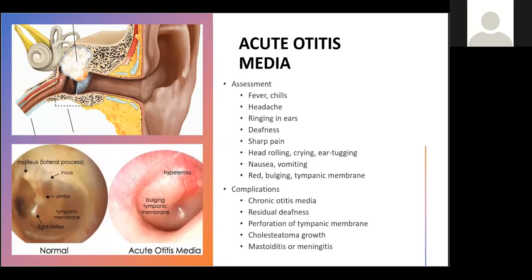Acute otitis media is an infection of the middle ear — a painful type of ear infection. It occurs when the area behind the eardrum, which is our middle ear, becomes inflamed and infected. It can be caused by bacteria or viruses. On examination, you'll see a bulging tympanic membrane with increased blood flow — hyperemia. This is acute otitis media.